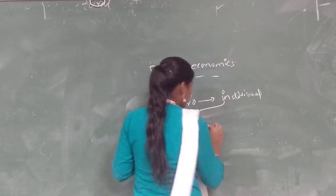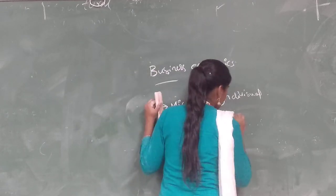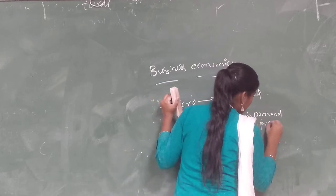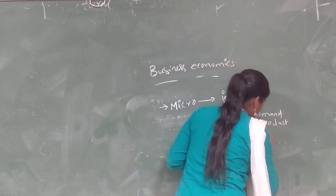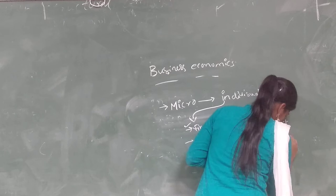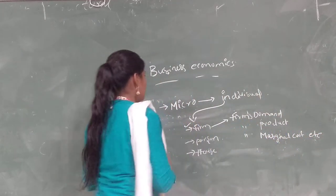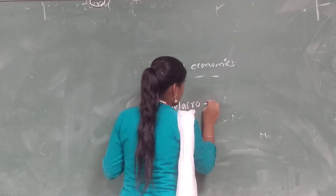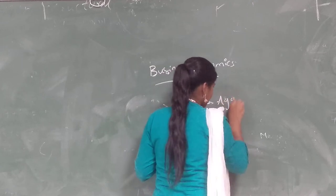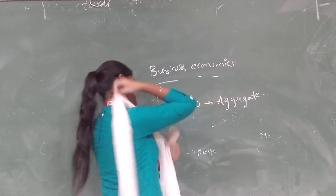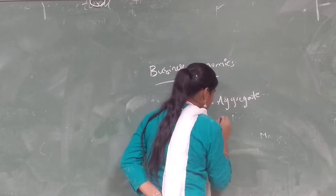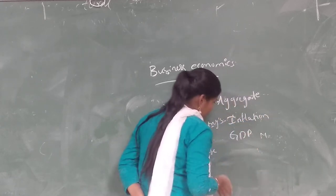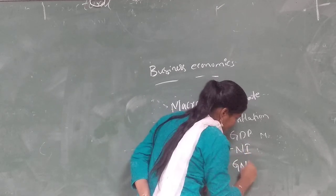When we say individual, we can take a firm. Microeconomics deals with a firm's demand, a firm's supply, and a firm's marginal cost. Macroeconomics, as the name itself says, looks at the total picture — that means aggregate. Macroeconomics deals with a country's inflation rate, a country's GDP, national income, GNP, etc.